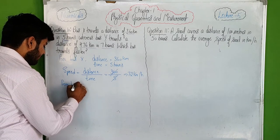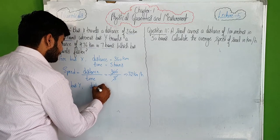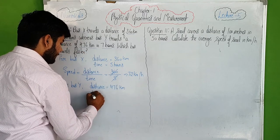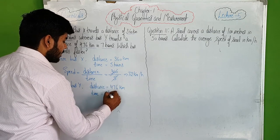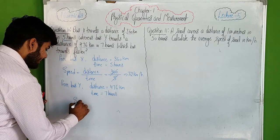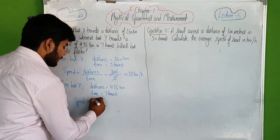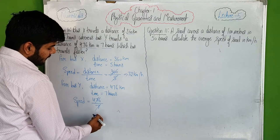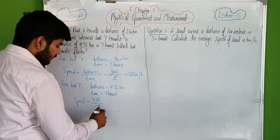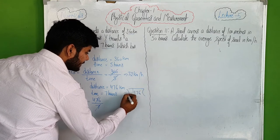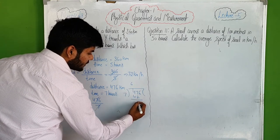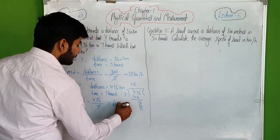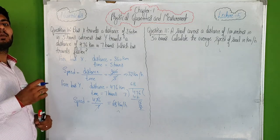For bus Y: distance is 476 km and time is 7 hours. Speed equals distance upon time, so 476 upon 7 equals 68 km per hour. This is the speed of bus Y.